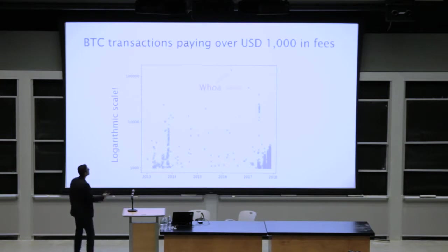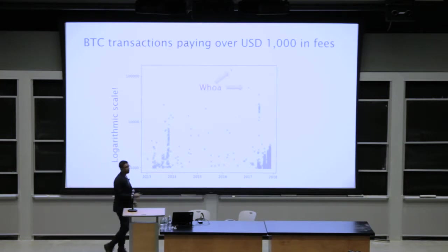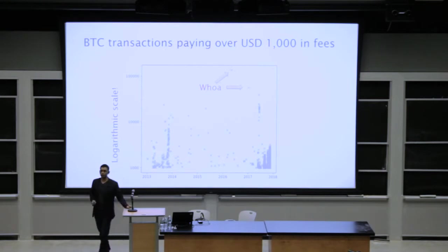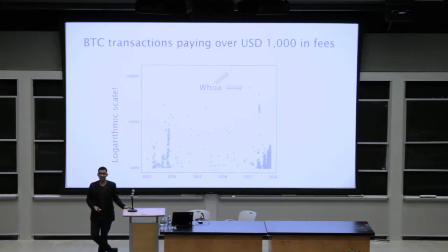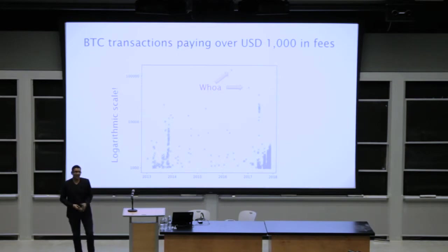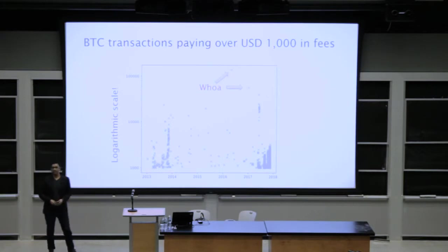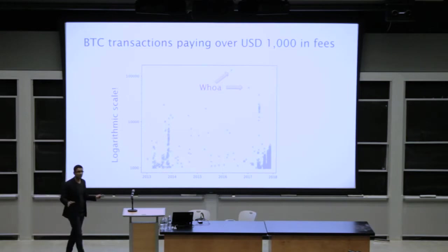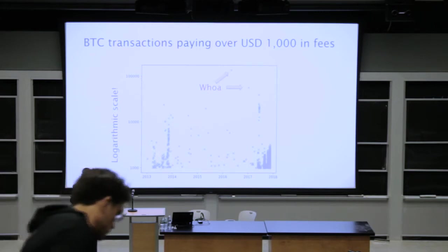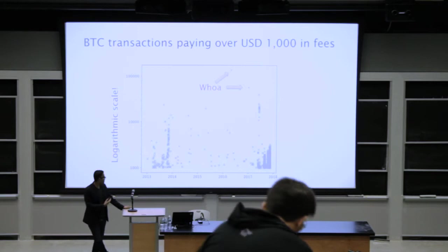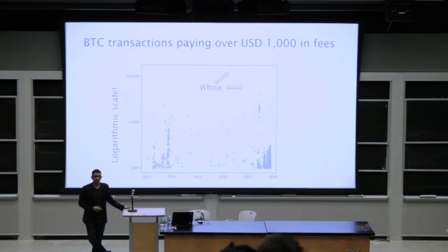What happened there? Somebody had a bug and they accidentally swapped the value and the transaction fee in their transaction. They lost that money, never to get it back. This is a nice illustration of the fact that the blockchain still has a lot of sharp corners — there are many ways to lose your money accidentally, and these are exactly the kinds of things we can find out through blockchain analysis.